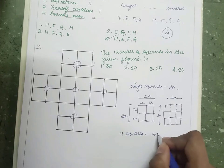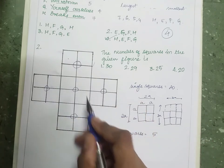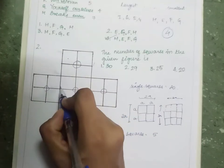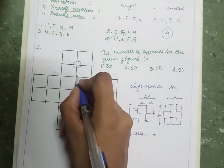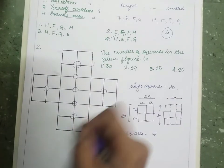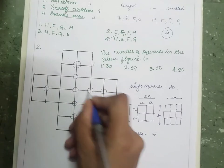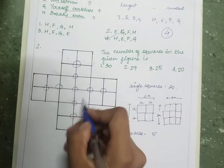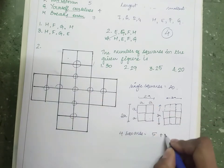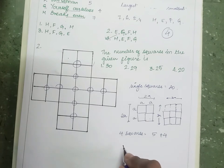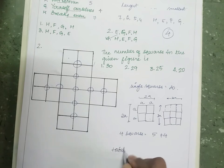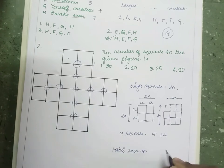Can there be any more 2×2 square formations? Yes — this part is also a four-square formation, giving one more; similarly this one, this one, and this one — four more new square formations. So the total is 5 plus 4 equals 9. The total square count is 20 plus 5 plus 4, which is 29. Option 2 is the correct answer.